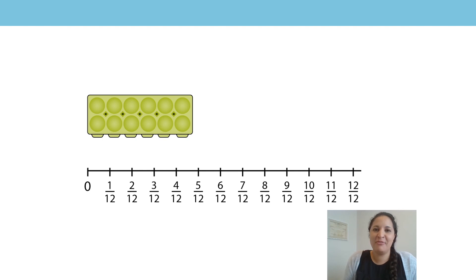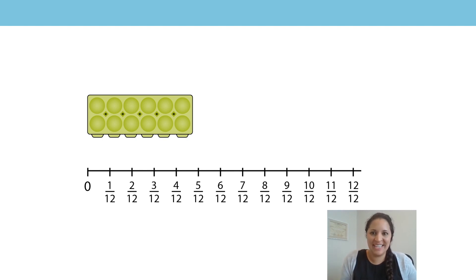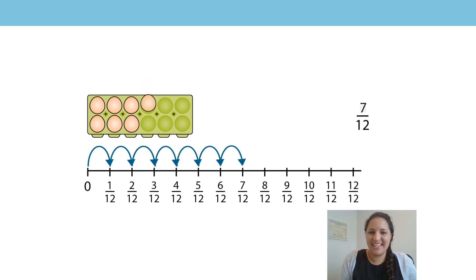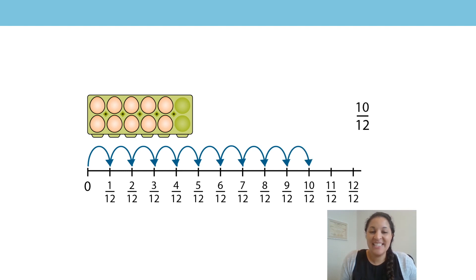Let's count up in unit fractions in twelfths. Count along with me and don't forget to start on zero. Off we go. Zero, one one-twelfth, two one-twelfths, three one-twelfths, four one-twelfths, five one-twelfths, six one-twelfths, seven one-twelfths, eight one-twelfths, nine one-twelfths, ten one-twelfths, eleven one-twelfths, twelve one-twelfths.